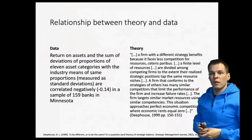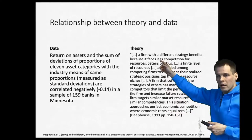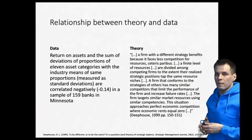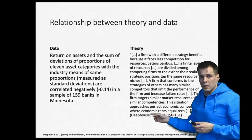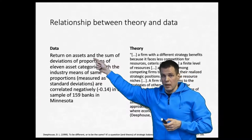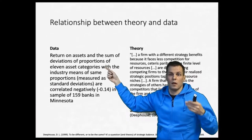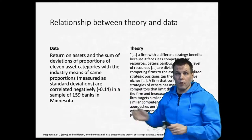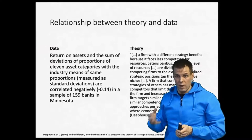To understand the reasoning between theory and data, let's look at the Deep House paper. Deep House theory is an elaborate description of why firms that differentiate should be more profitable, or why too much differentiation leads to less profitability. Their data comes from 159 banks, using return on assets as the dependent variable and deviations of proportions of 11 asset categories — measuring how different each bank was from the industry mean — as their measure of strategic deviation.